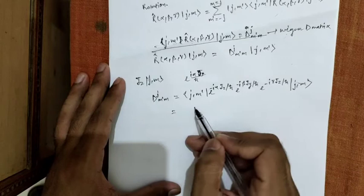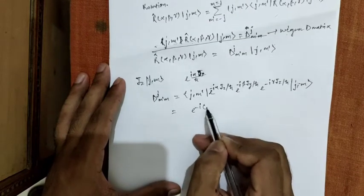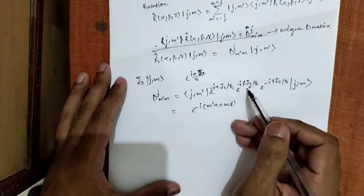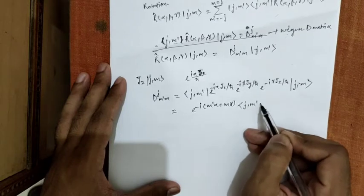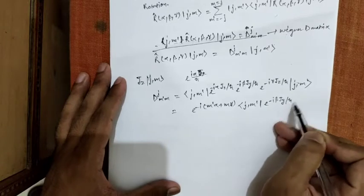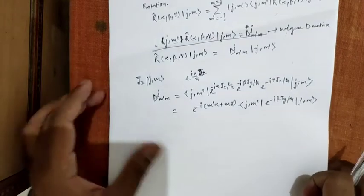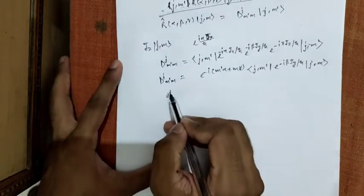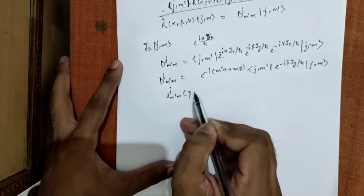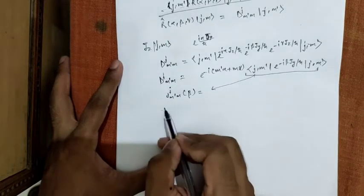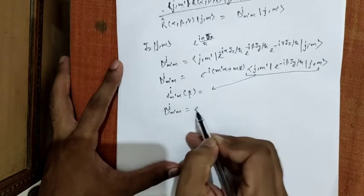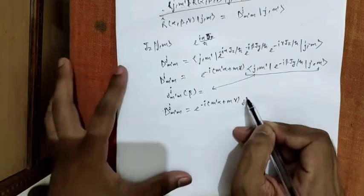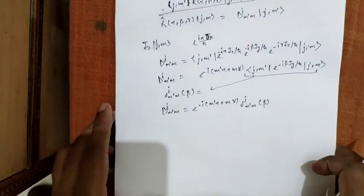When this operator acts on |j,m⟩, it gives us e^{-i(m'α + mγ)}, leaving the Jy component unevaluated since we do not yet know how it acts. Therefore D^j_{m'm}(α,β,γ) = e^{-i(m'α + mγ)} · d^j_{m'm}(β), where d^j_{m'm}(β) is the reduced rotation matrix element involving only the Jy rotation.